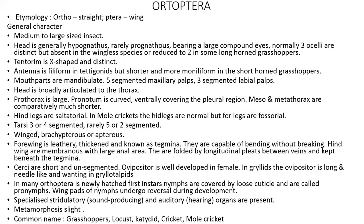Orthoptera is the order of insects. 'Ortho' means straight and 'ptera' means wings — those insects which have straight wings. Their forewings are smaller than the hindwings. Hindwings are more membranous, while the forewings are leathery or tegmina. Such characters are found in this order.